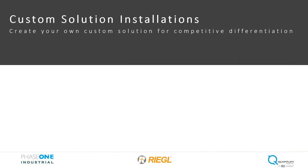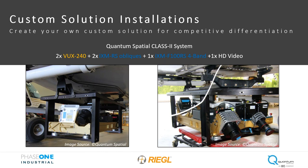Regal's VUX LiDAR sensors are valued by clients and integrators for their compact size, data quality, and extensive scalability with peripheral imaging sensors, allowing interesting orientation geometries for various application verticals to maximize data quality and coverage. This is an example of what Quantum Spatial has done with a pair of VUX 240 sensors and various Phase One cameras for their powerline collection program — and Ryan will go into more detail on this specific configuration shortly.